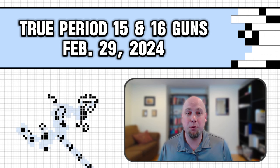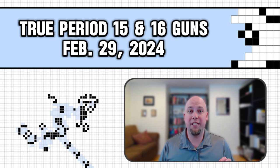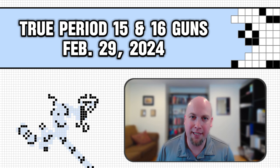In particular, on February 29th of this year, 2024, the very first ever True Period 15 and 16 glider guns were found.